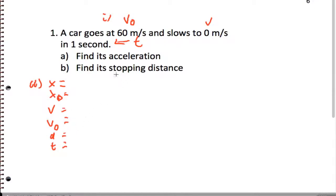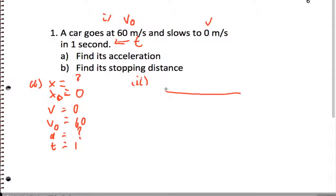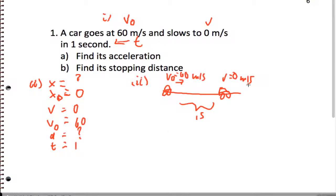For step two, we fill in each of the letters with their numbers. If I don't tell you what X-naught is, assume it's zero. We don't know X-final. We know V is zero, V-naught is 60, we don't know the acceleration, but we know the time is one second. For step three, let's draw a picture: we have a car here, and then it just stops. So V is zero, V-naught is 60, and this happens over one second.